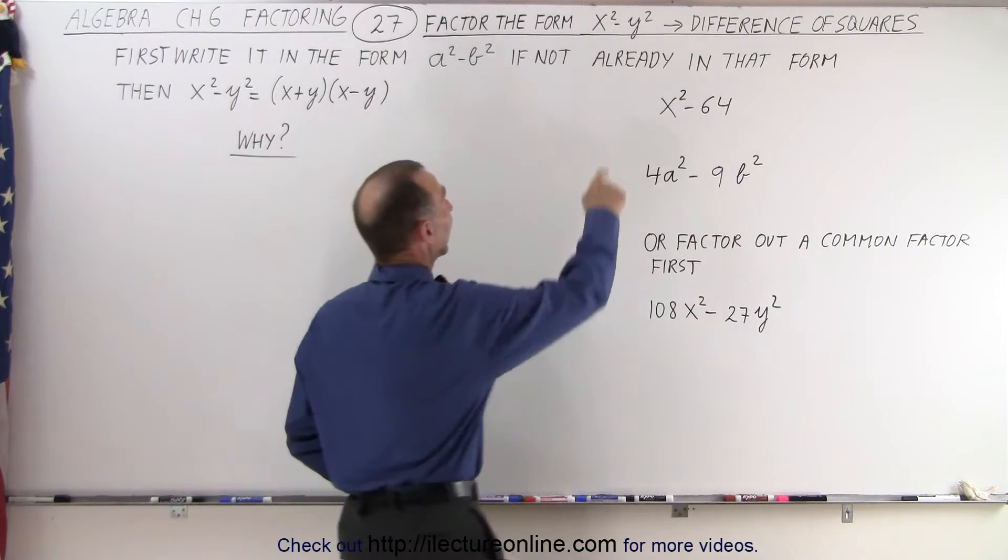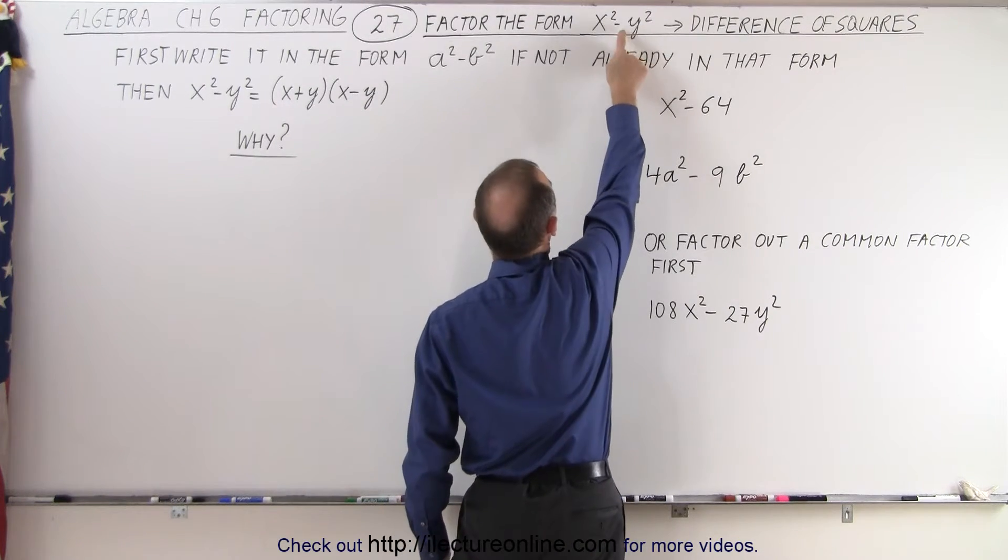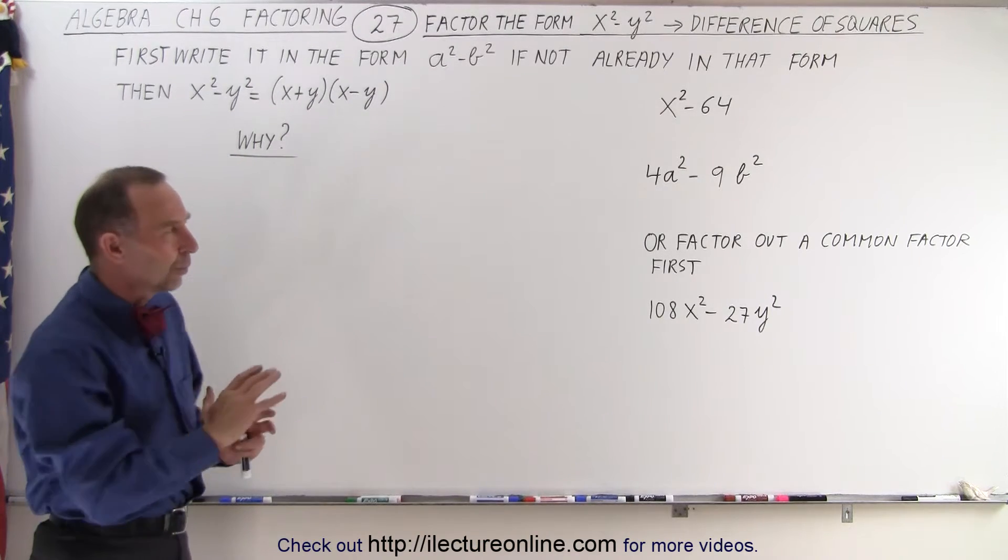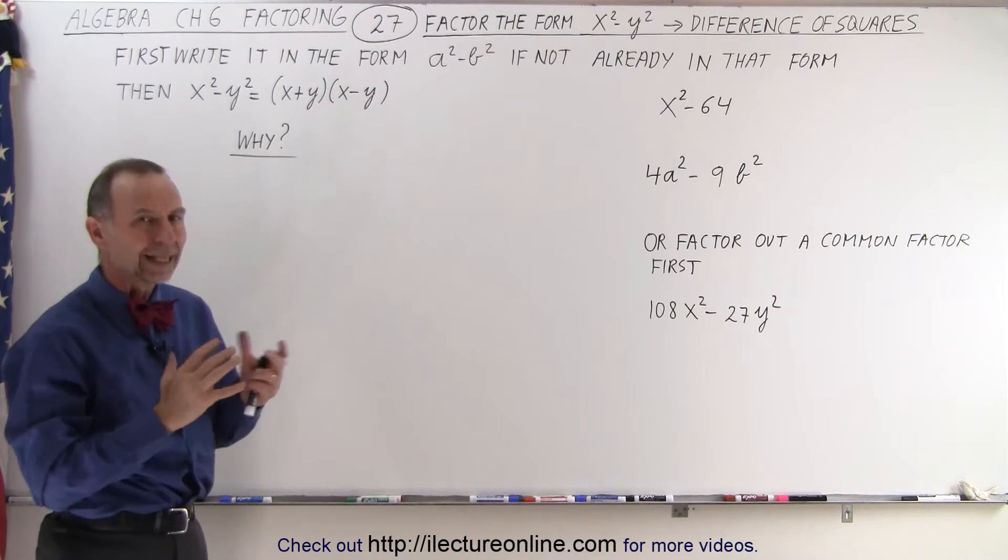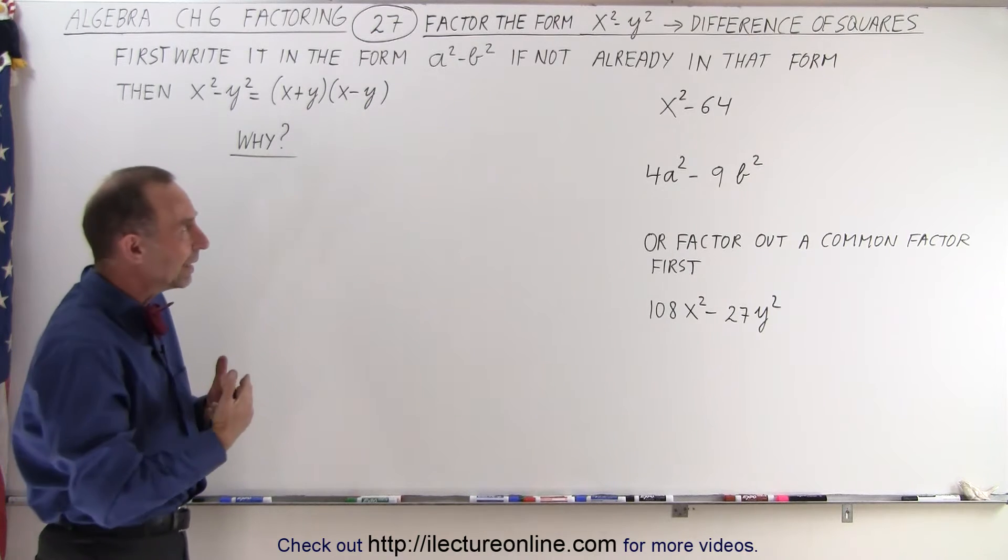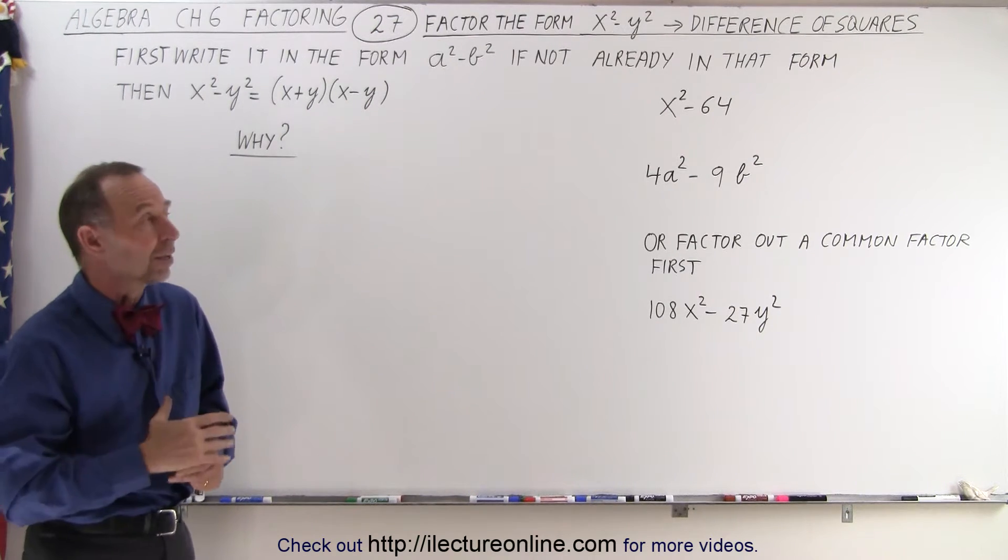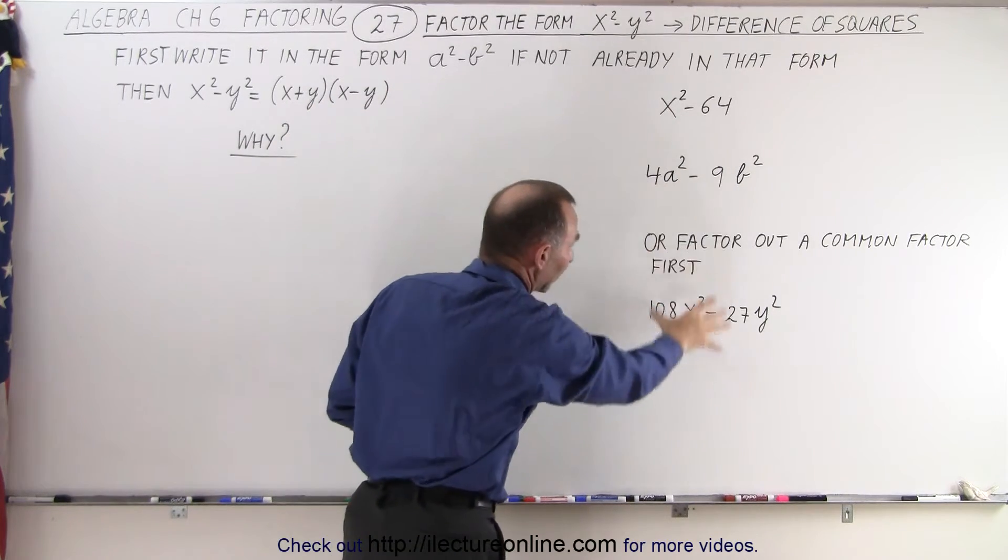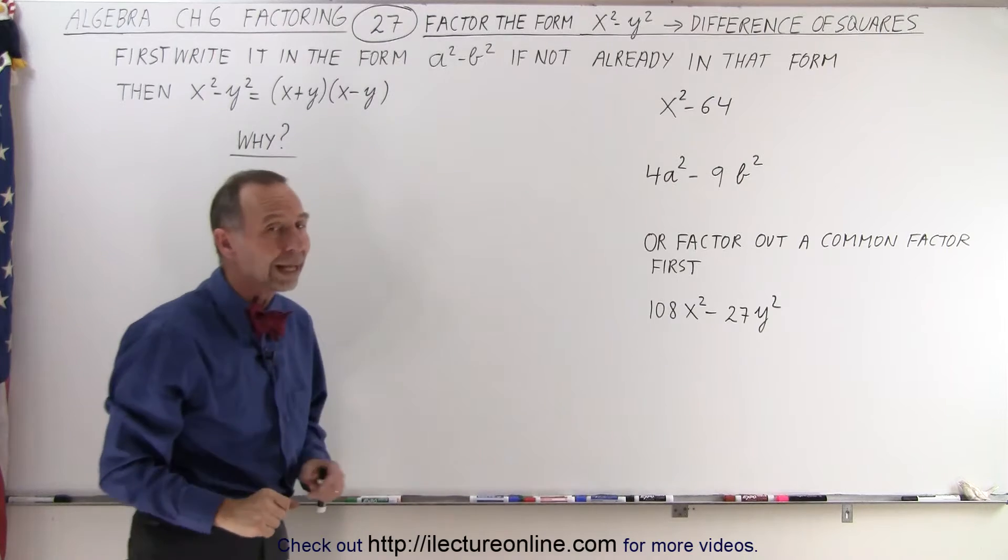In other words, x is squared, y is squared, and we're subtracting the two, so that means the difference of squares. And sometimes we have something that kind of looks like it, but not quite. It's mainly the difference of squares in disguise, which means that we first must write in that form if it's not already in that form.